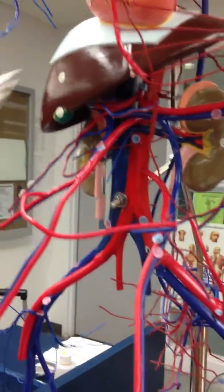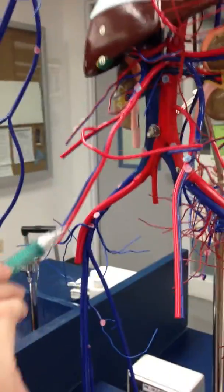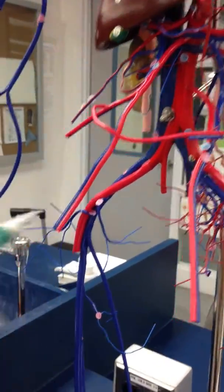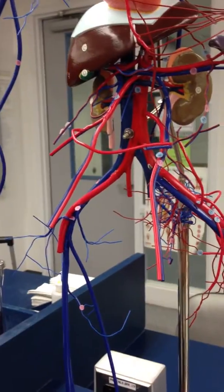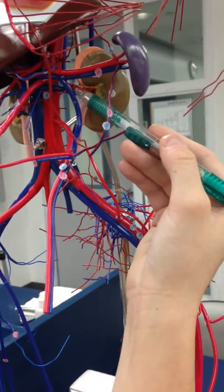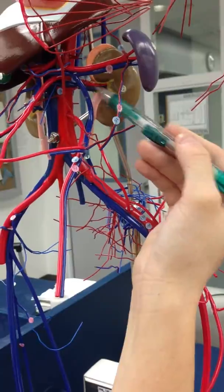The superior mesenteric is here coming out of the very front which would be number 93. The renal arteries are connected to the kidneys so it's back here number 98 right here.